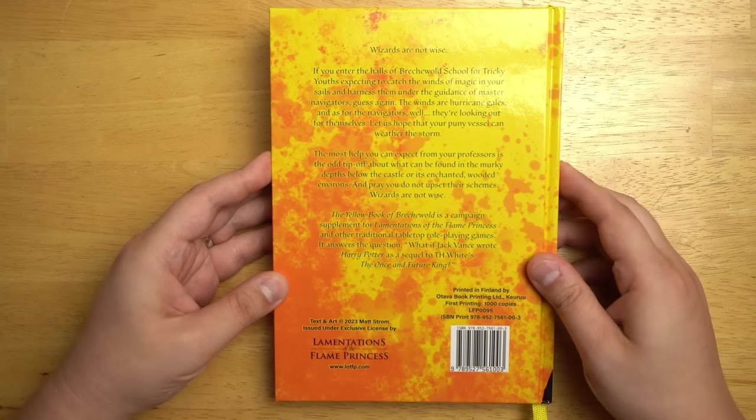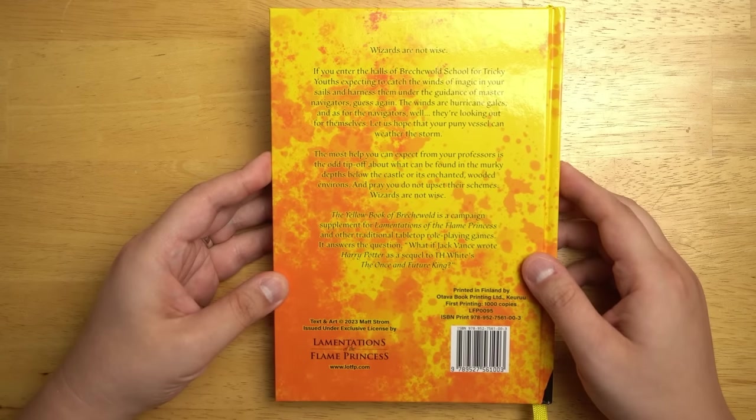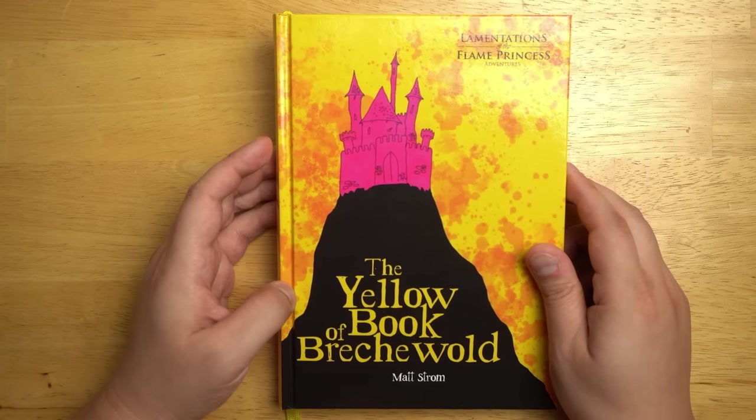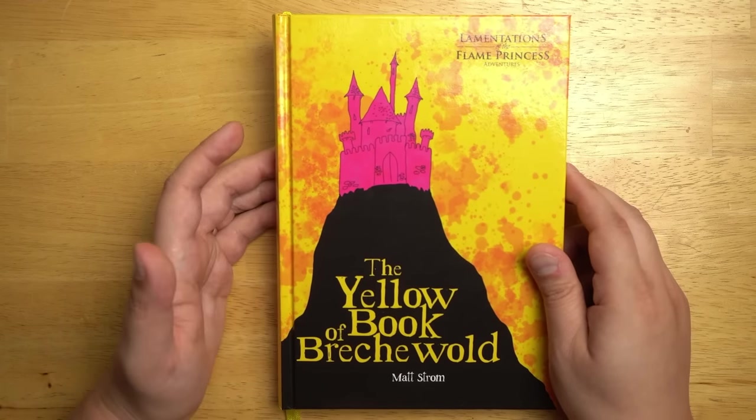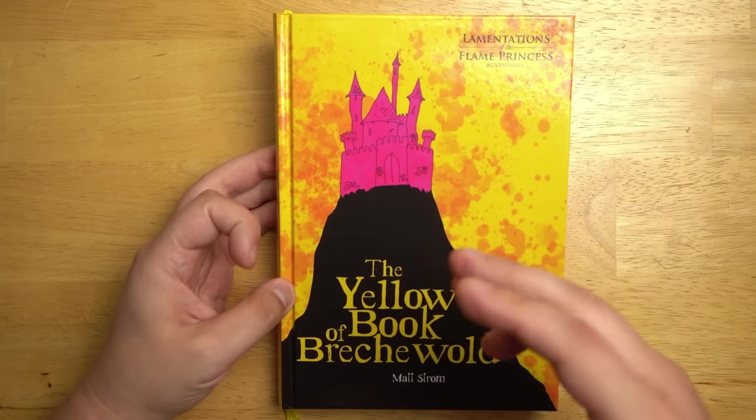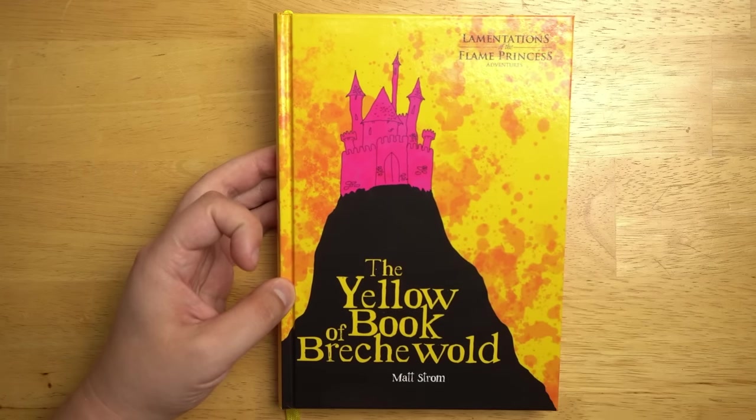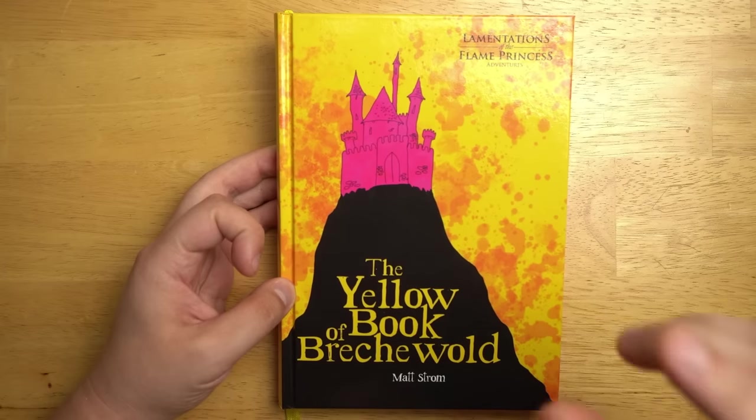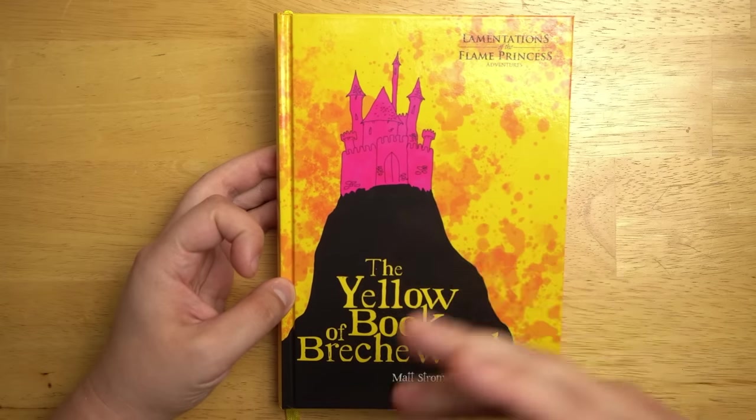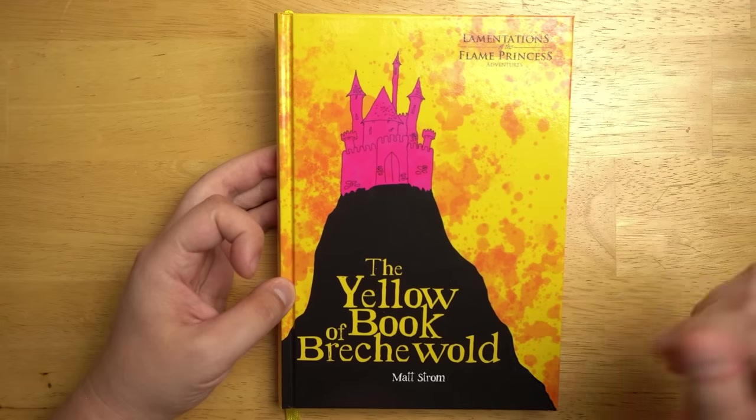Here's the back of the book here and I love this blurb down here at the bottom. It answers the question, what if Jack Vance wrote Harry Potter as a sequel to T.H. White's Once and Future King? The general gist of the book is that you are at Breckowold, which is a school for magic, a little bit like Harry Potter, could be a bit like Hogwarts, but most of the adventures do not take place inside the castle doing lessons and things like that. Rather, you are exploring the mega dungeon that is underneath the castle. Well, maybe it's more like a kilo dungeon. It's a pretty big dungeon.